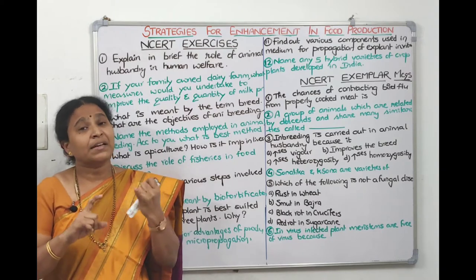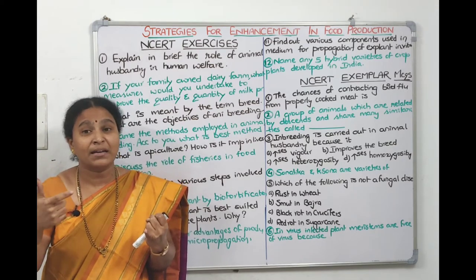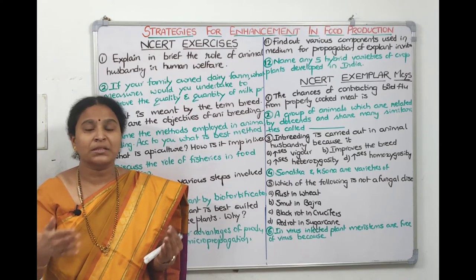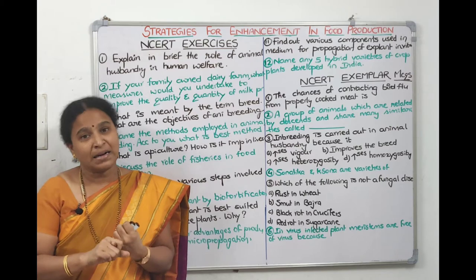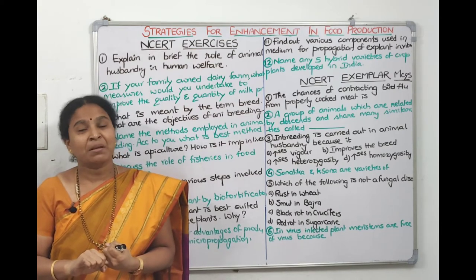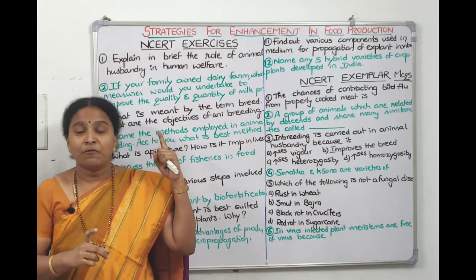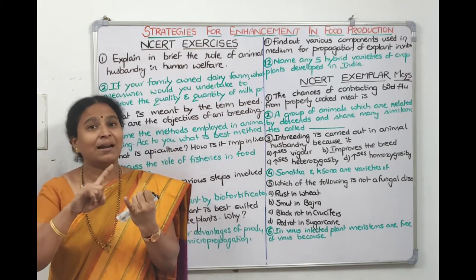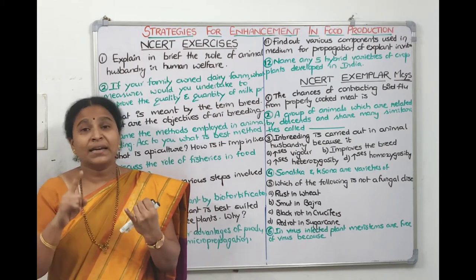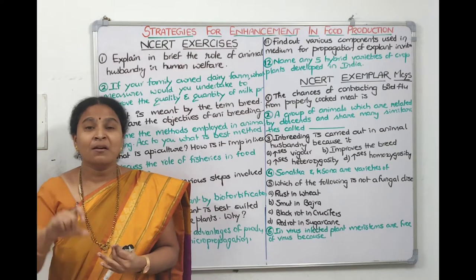From cattle we get milk, which is a good source of protein, minerals like calcium, magnesium, and iron. For a newborn baby, milk is a whole food for the first six to seven months. From poultry farming we get eggs, which also contain a good amount of protein. We also get meat from cattle and poultry, which is also a good source of protein.